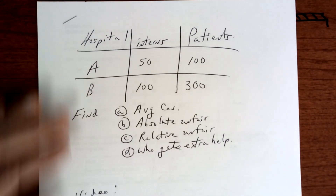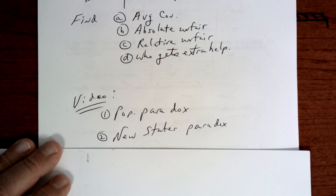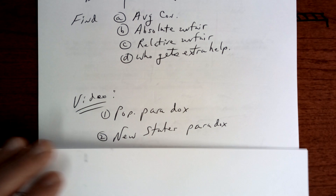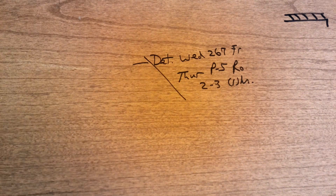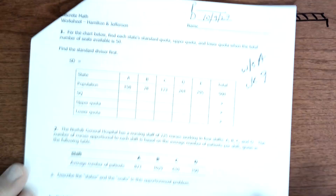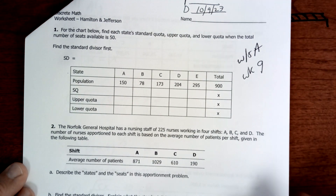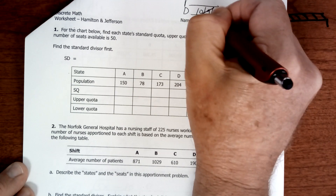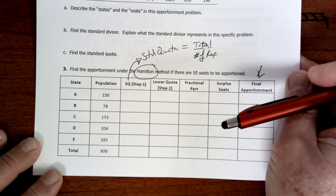We're going to watch some videos here on the population paradox and the new states paradox — make sure you take notes. And then we're going to do that worksheet I had planned on doing yesterday, but kids were testing for the PSAT. So the date here is going to be changed to 10/10. And we'll talk about how to do some of these together.